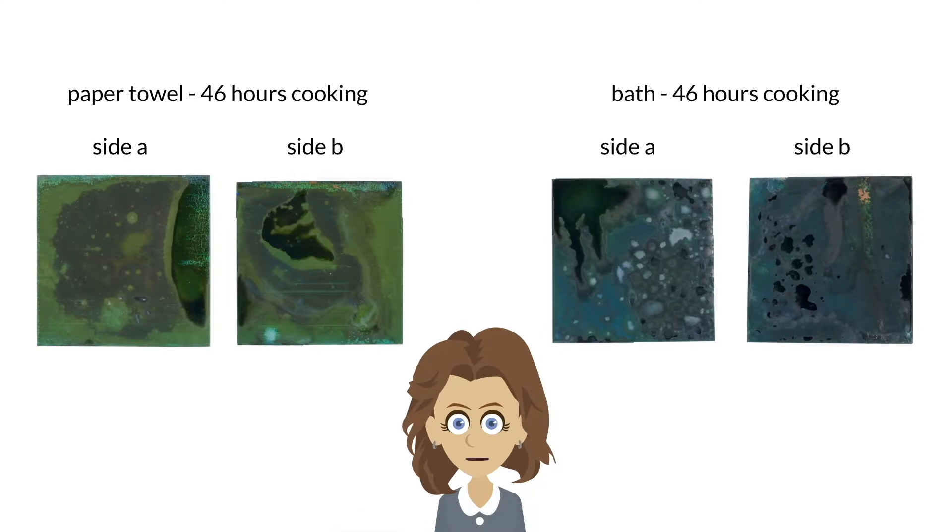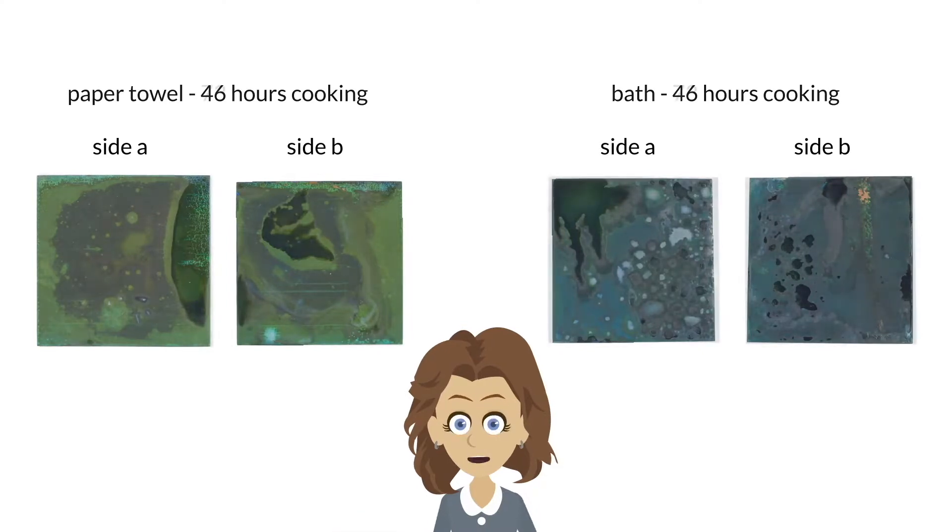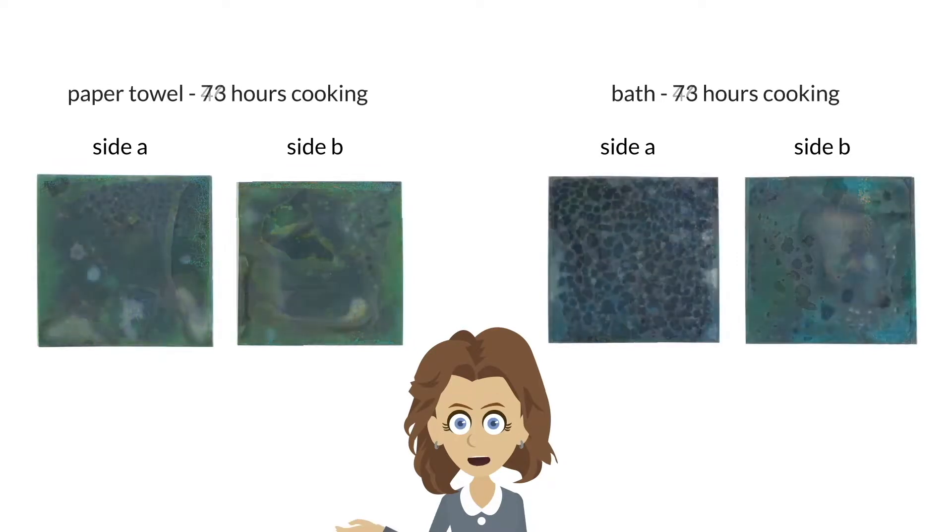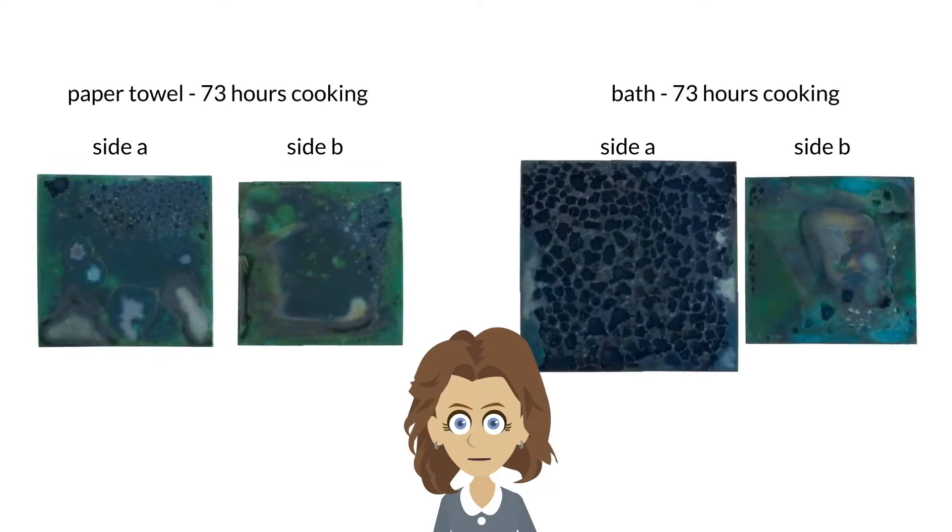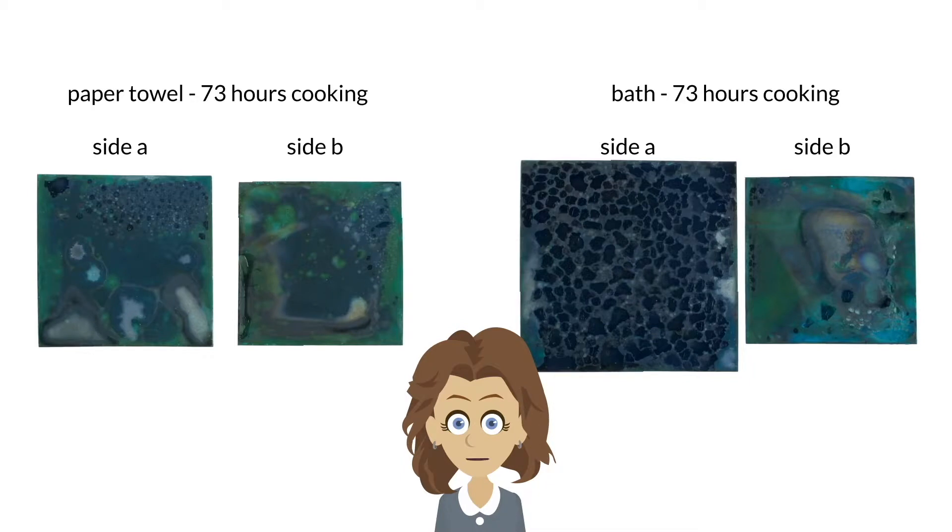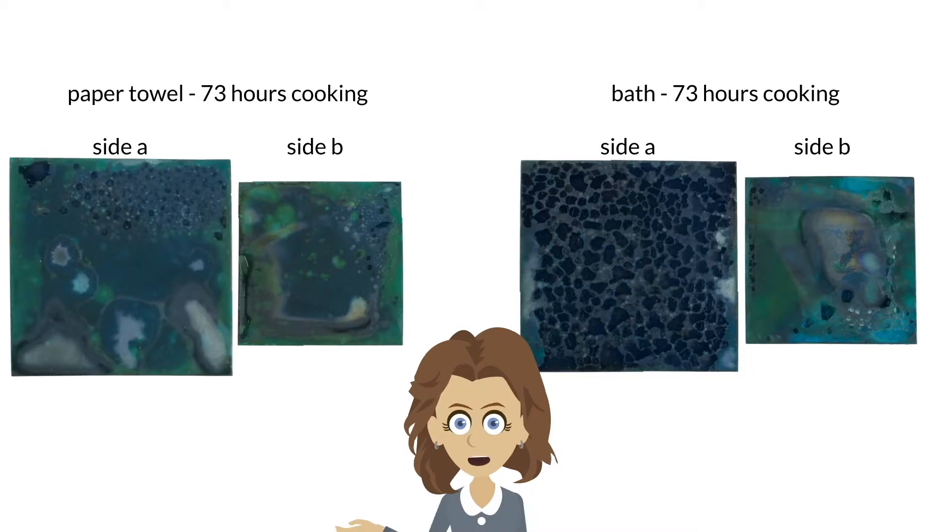At 73 hours, a change in color and textures, most notable, side A of the bath fume chamber has developed a dark blue crust of scale-like shards, while side A of the paper towel fume chamber has also developed blue scales, but much smaller and fewer.